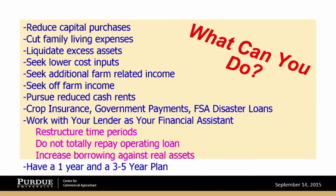The contribution margins are substantially smaller than in the past, highlighting that we're in a dilemma zone where costs are above revenues. Strategies for producers in this environment include: reducing capital purchases, cutting family living expenses, liquidating excess assets and unused machinery, seeking lower cost inputs, pursuing additional farm-related and off-farm income, and pursuing reduced cash rents.